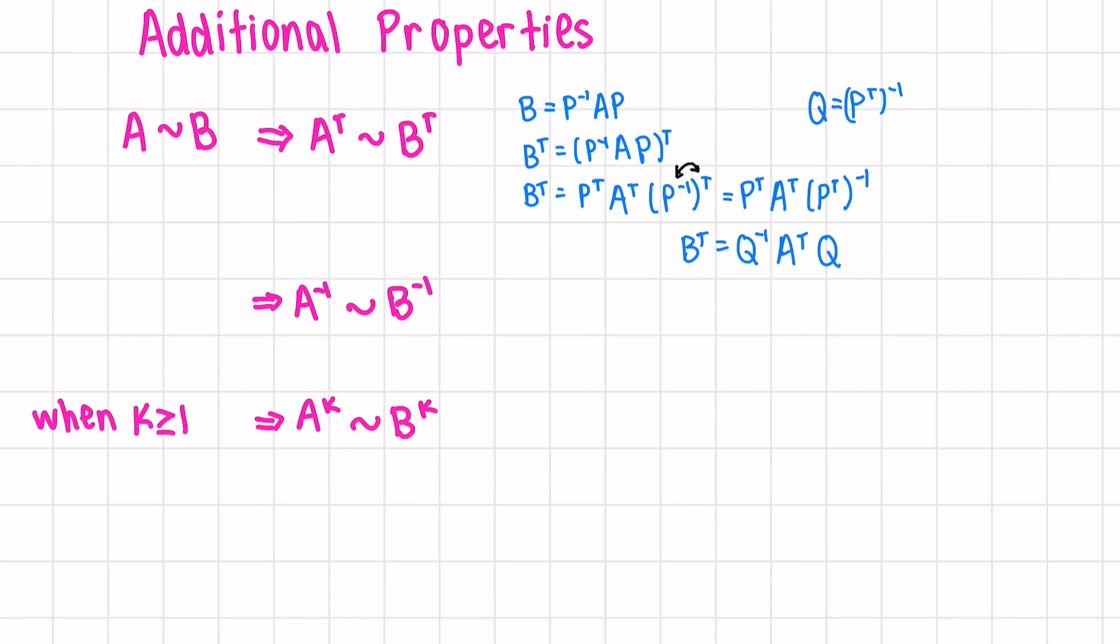Next, to show the inverses are similar, this is easier. We can first take the inverse of both sides. When we apply the inverse, we switch the order of the matrices. P inverse inverse is just itself. And we already have everything in the right order. So we're done.